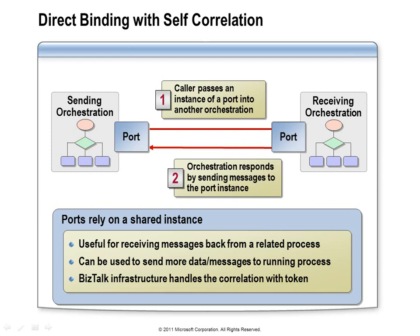You might say this sounds like tight coupling between the two orchestrations, and the potential is there. However, nothing stops you from implementing multiple orchestrations that could accept these ports as parameters. The first orchestration could decide at runtime which secondary orchestration to call. The main limitation is that the first orchestration needs to invoke the secondary orchestration by name. On the other hand, this type of binding is especially useful if you don't have a message property to use for correlation, since the orchestration runtime handles the correlation for you by generating a unique ID.